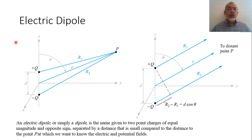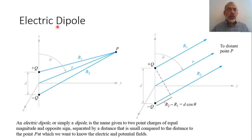Electric dipole is a special problem in electrostatic fields and it is quite useful to explain the properties of dielectric materials. An electric dipole is composed of two point charges separated by distance d, and these two charges are equal in magnitude and opposite in sign. So we have positive q and negative q separated by distance d. This configuration is known as an electric dipole — 'di' here meaning two.